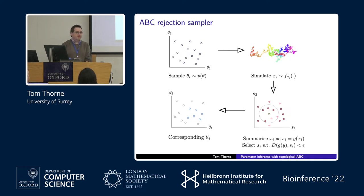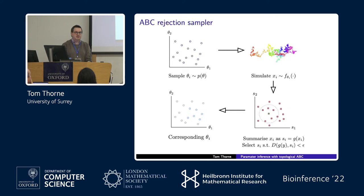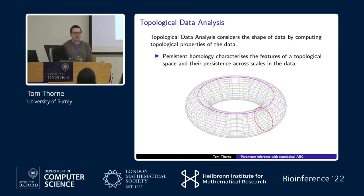The thing we need to think about is how to select the summary statistics for our model of angiogenesis — we can simulate from the model but we need a way of summarizing the data. People have looked at this in the past, doing visual inspection and looking for things like the number of segments in the data, the number of tips at the end, and so on. In this work, we were interested in whether we could apply topological data analysis to use as our summary statistics in the inference.